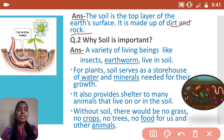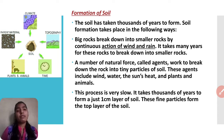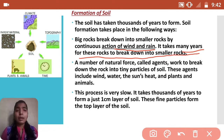Now let's see how soil is formed. Soil has taken thousands of years to form. The soil you see around you converted from big rocks. Big rocks break down into smaller rocks by the action of wind and rain, and it takes many years for this to happen.